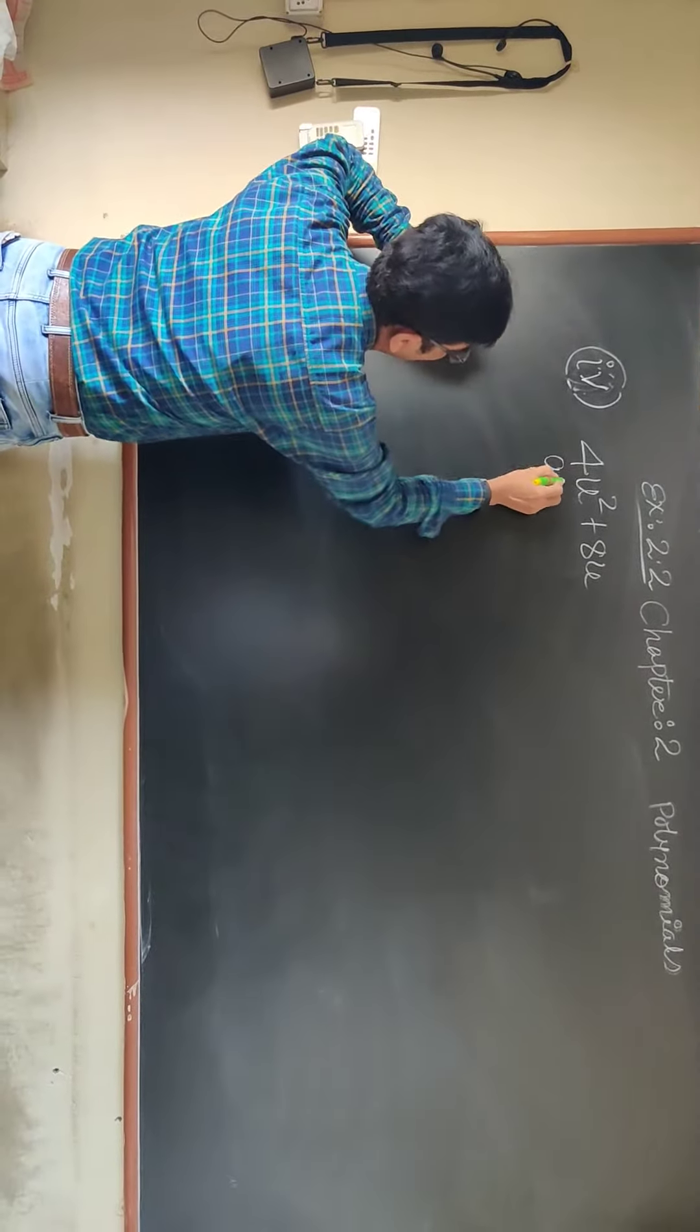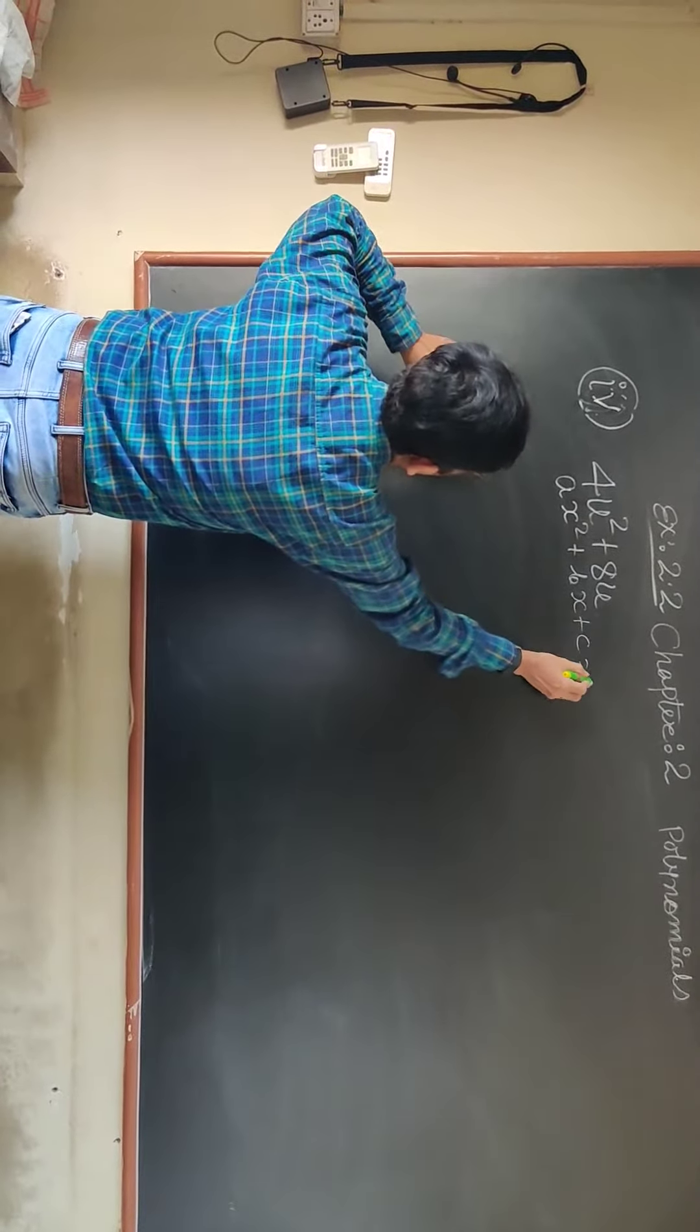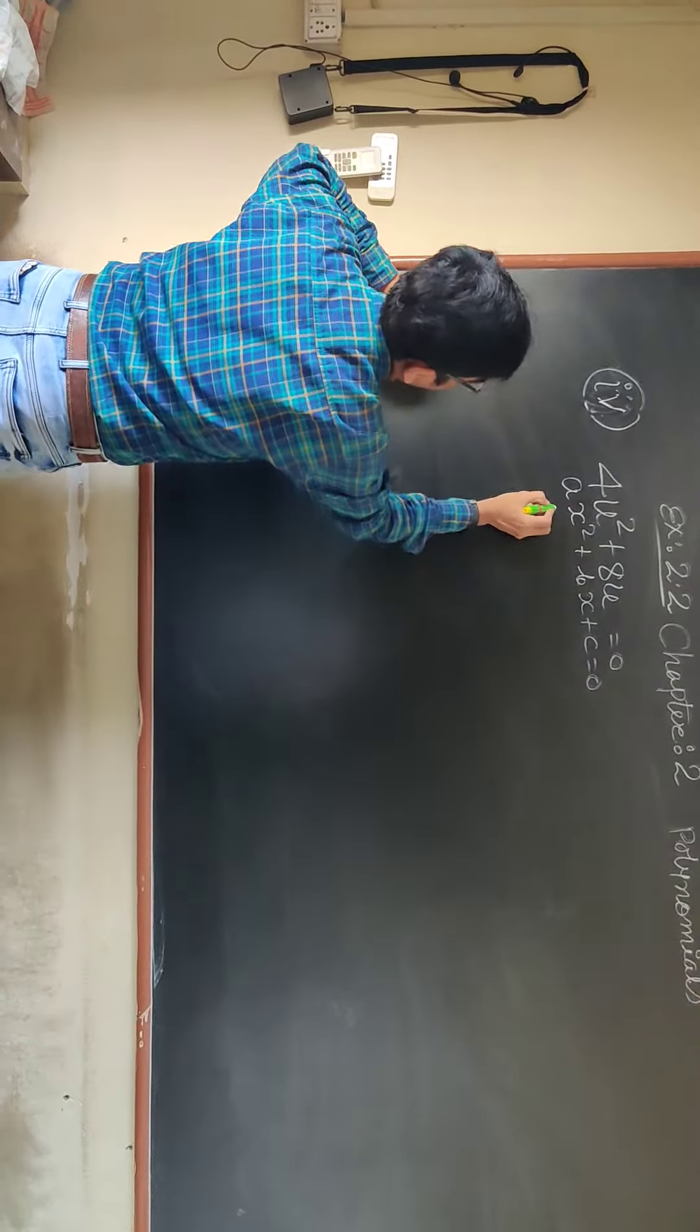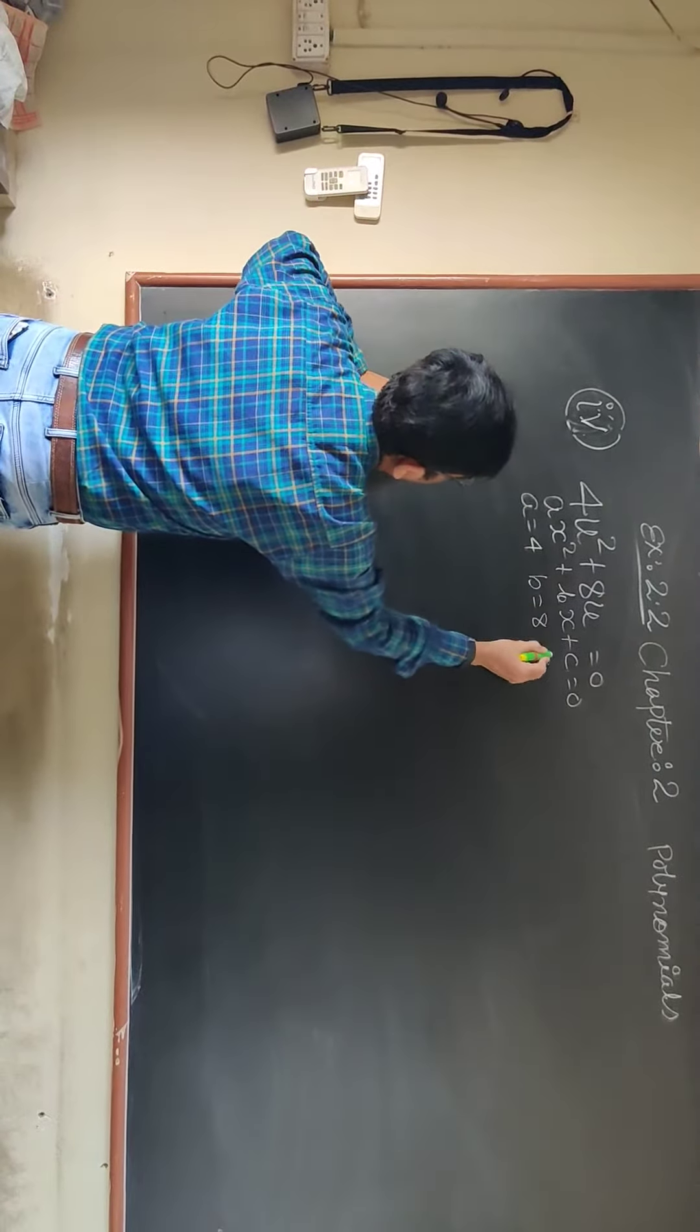If you compare with ax square plus bx plus c, right, equal to 0, there is no constant. A is 4, b is 8, but there is no c.